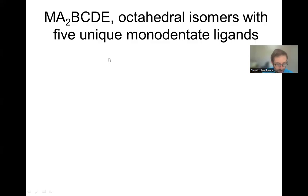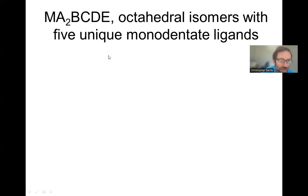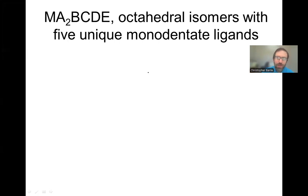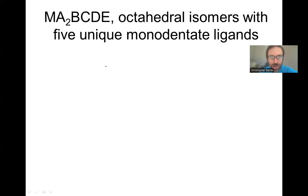In this video we are going to determine the structure of all of the isomers of the form MA₂BCDE. This is an octahedral coordination environment around the central atom M, typically a transition metal. This is basically the second most complicated example we can go over with monodentate ligands in an octahedral environment. The one with the most isomers has six unique ligands, but this has five unique monodentate ligands.